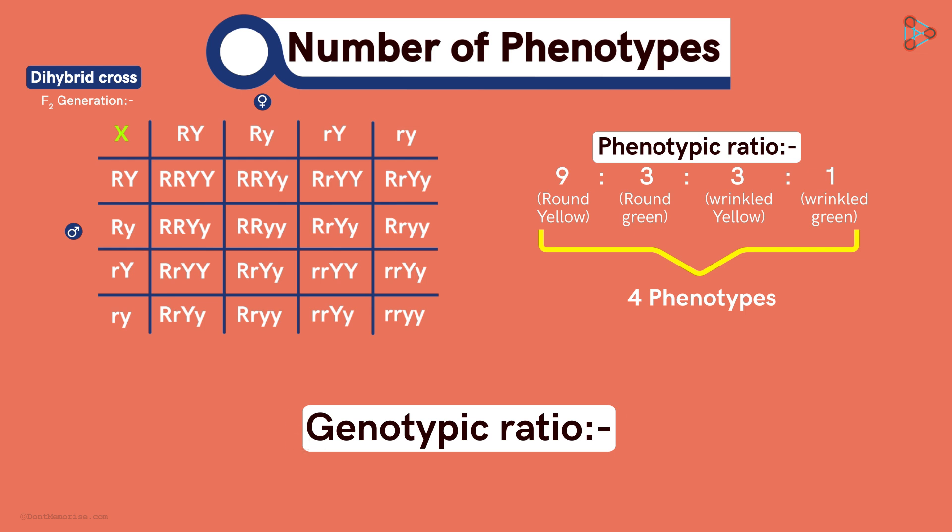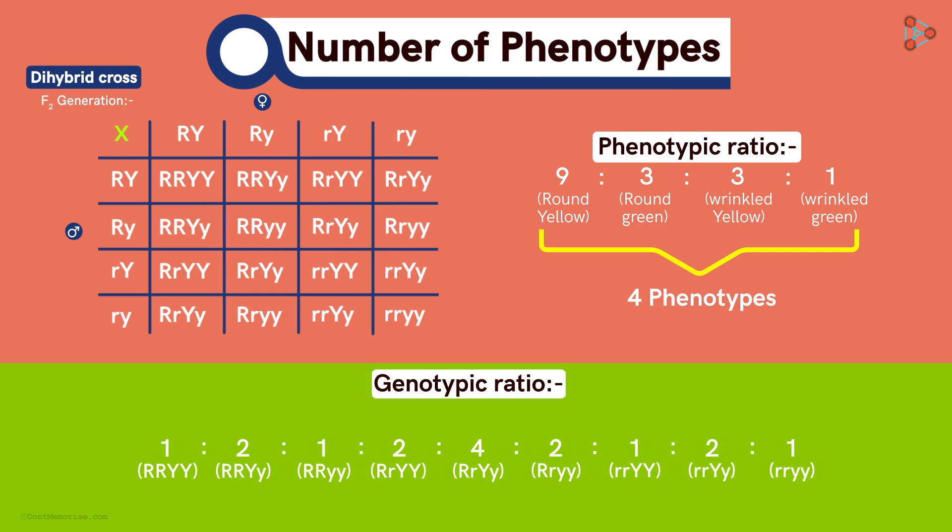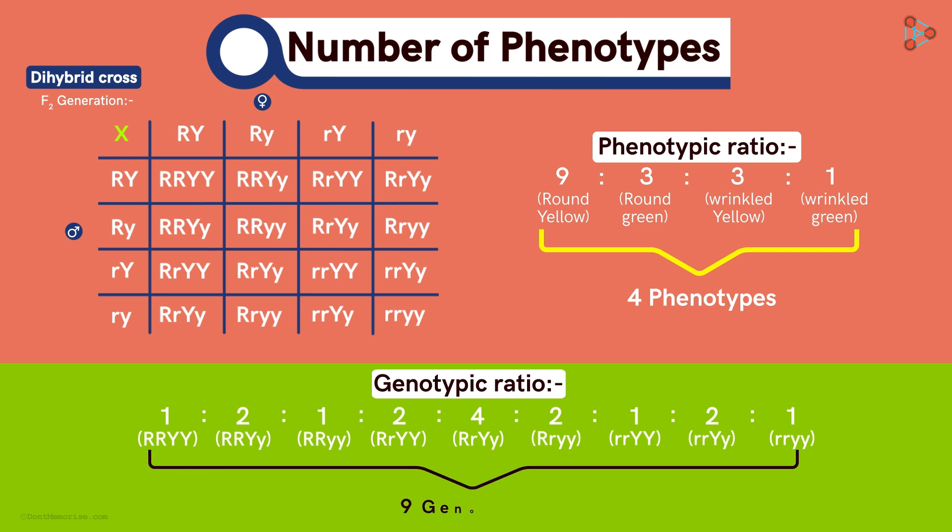The genotypic ratio obtained for the F2 generation is this! Huge, isn't it? Why is it so big? It's because there are 9 different genotypes according to the table! Study of genetics is indeed very interesting!